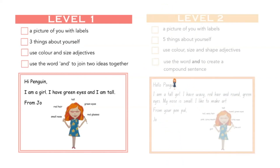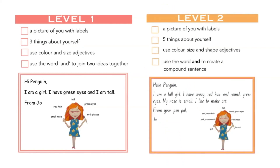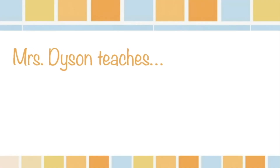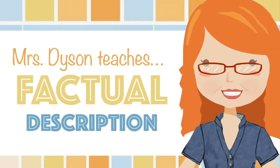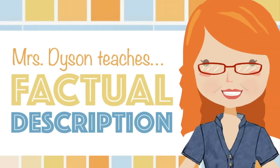Choose level 2 and we'll use colour, size and shape adjectives to describe five things about ourselves. See you soon, little writers. Bye-bye.